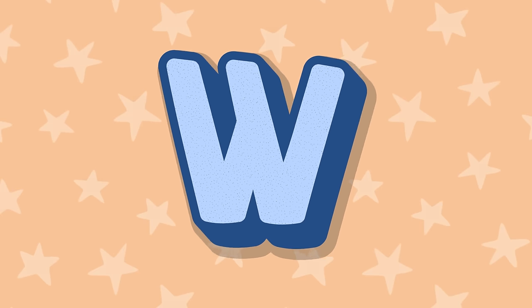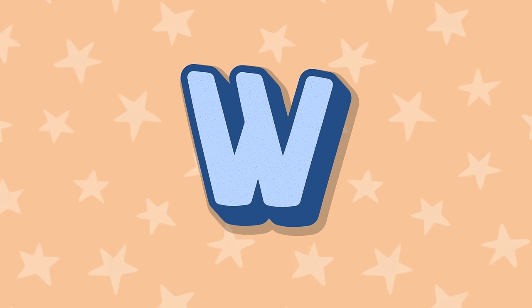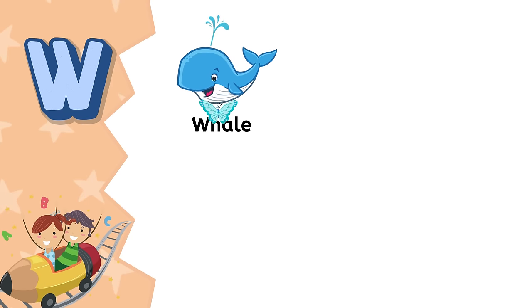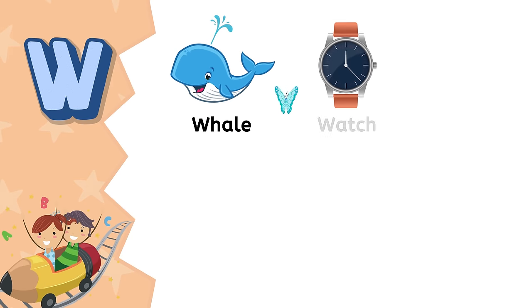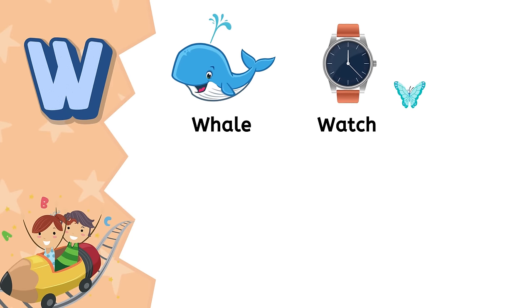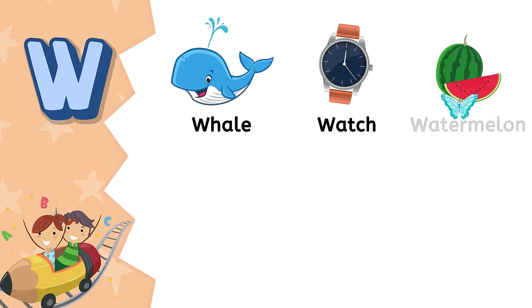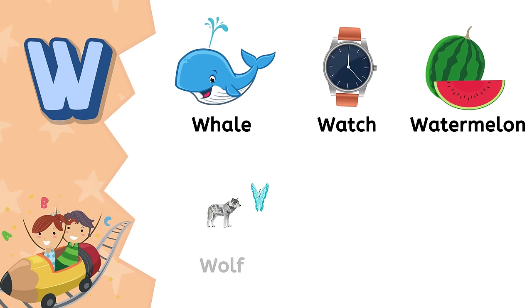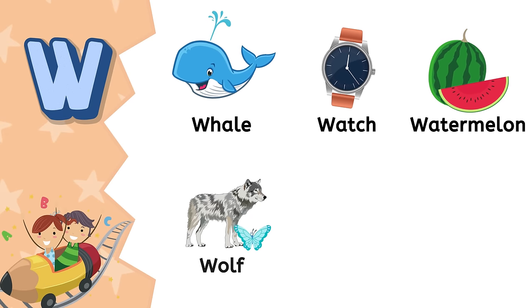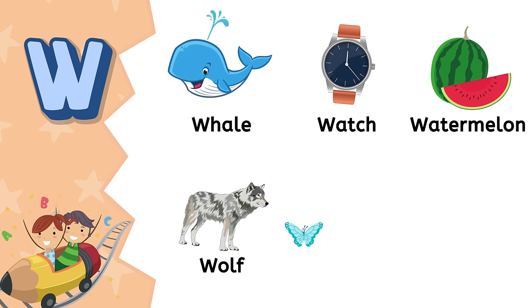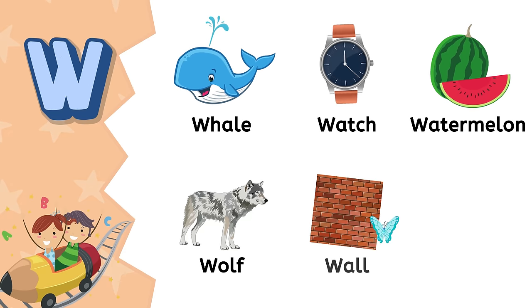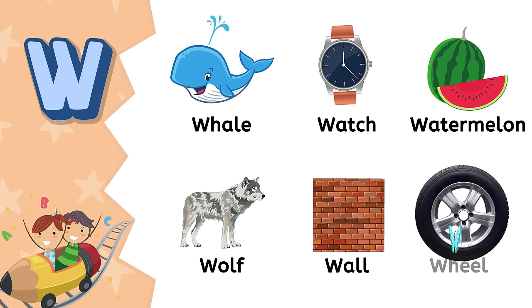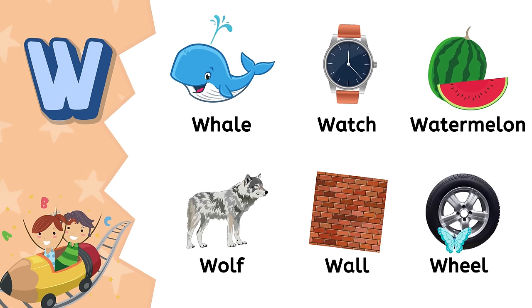W. W is for whale. W is for watch. W is for watermelon. W is for wolf. W is for wall. W is for wheel.